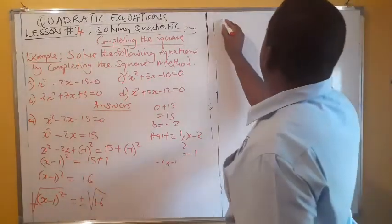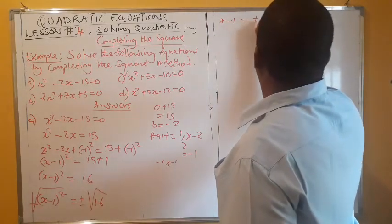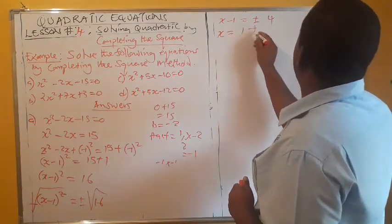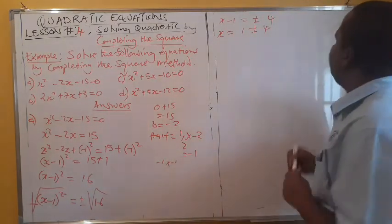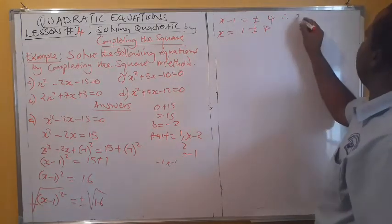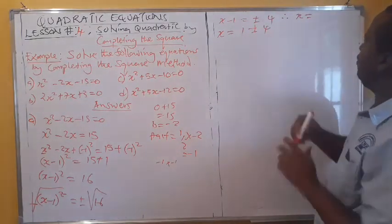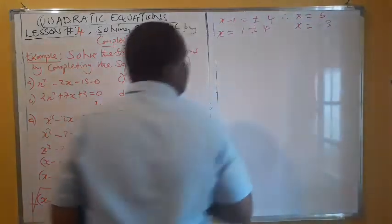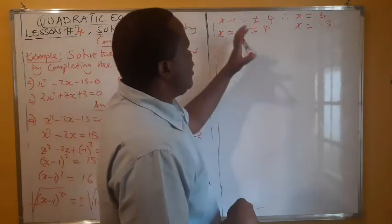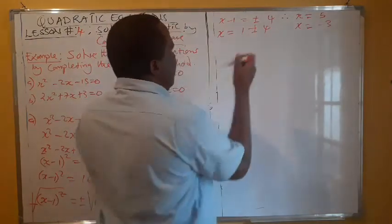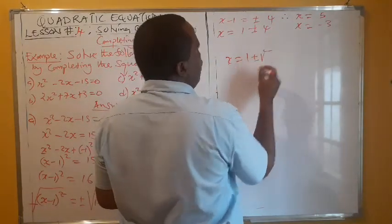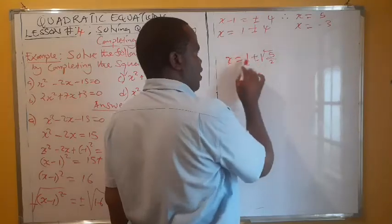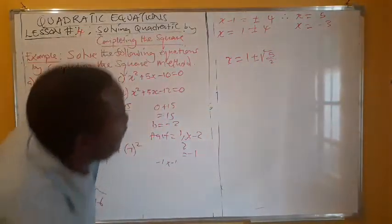So x minus 1 is equal to plus or minus the square root of 16, which is 4. Therefore x equals 1 plus or minus 4. This gives x equals 1 plus 4, which is 5, or x equals 1 minus 4, which is negative 3. Those are the two values of x. Even if there were a non-perfect square under the root, say root 5 over 2, the approach would be the same — just keep adding or subtracting.